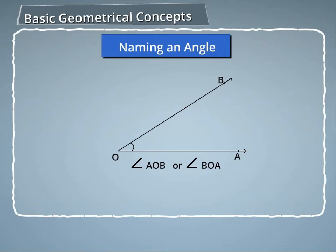An angle is also named by its vertex like angle O. It is sometimes named by a small letter or a numeral like angle A or angle 1.